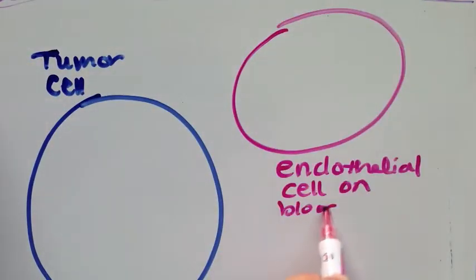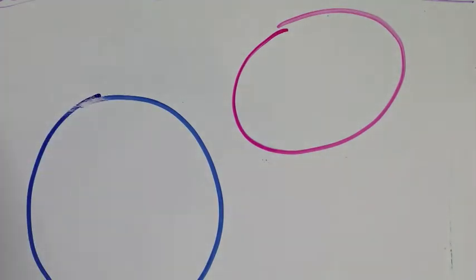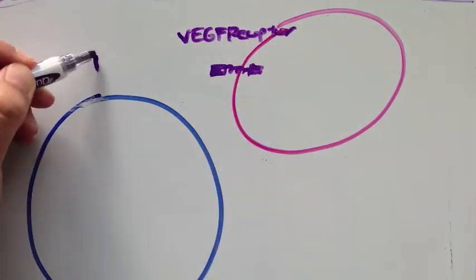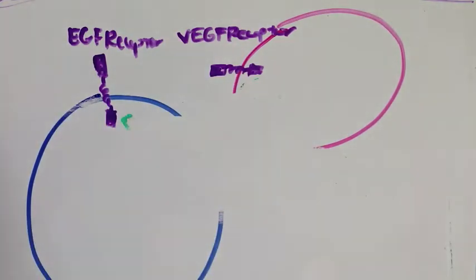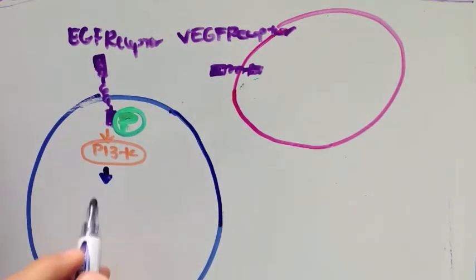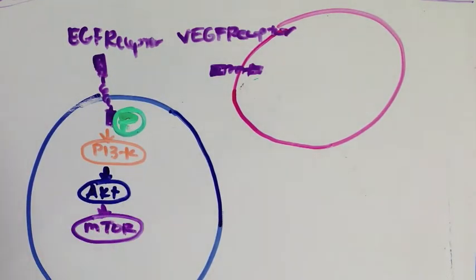Both the VEGF and EGFR receptors contain tyrosine kinase domains that are phosphorylated and initiate a downstream signaling cascade. This intracellular downstream signaling pathway ultimately leads to tumor cell growth and differentiation.